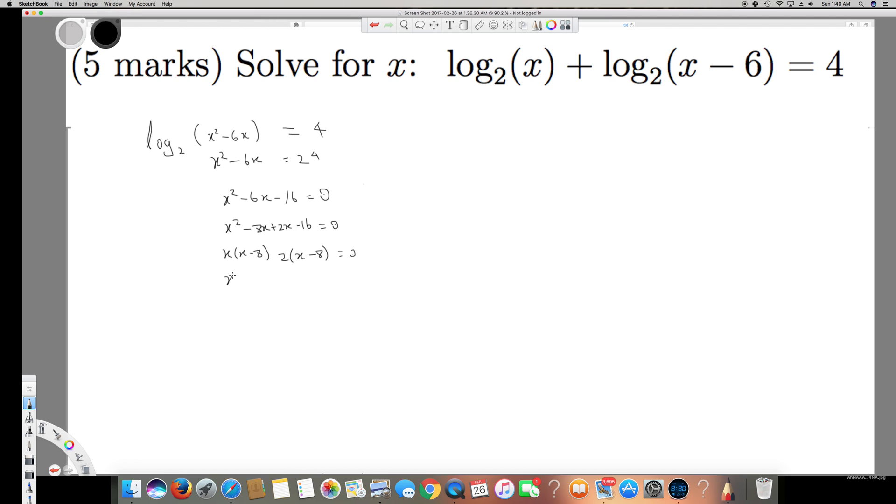So now we have two equations: (x + 2)(x - 8) is equal to 0. Then we can find each value. x is equal to negative 2 or x is equal to 8.